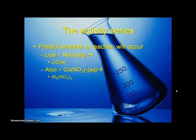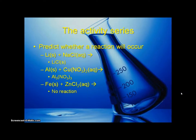Aluminum and copper nitrate forms aluminum nitrate — a reaction takes place. Iron and zinc chloride have no reaction because iron is after zinc in the activity series, and zinc is already bound up in a compound.